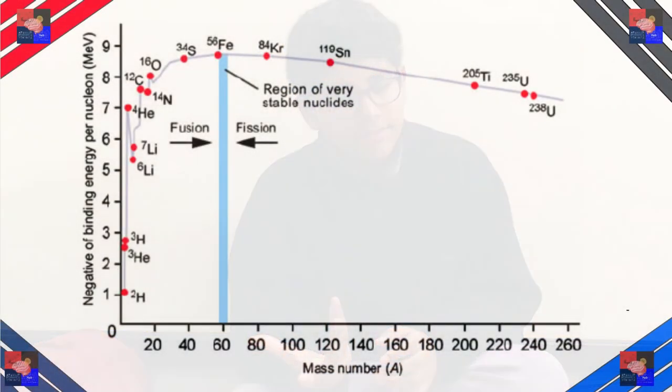We could theoretically have a fusion reactor on Earth too, but we can't really control it, so it's not currently useful. This prevents us from using fusion as a practical energy source — which would be really powerful. Hypothetically, it could even serve as an engine for spacecraft. The light nuclei fusing together undergo a far greater energy change than heavy nuclei breaking apart, meaning fusion reactions release far more energy than fission reactions — so much that it is nearly impossible to contain and therefore use.